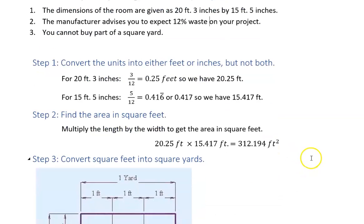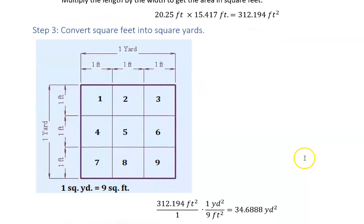Now I need to convert square feet into square yards, and this is where people make a mistake a lot of times. But when you think about one yard, this is one yard on this side and one yard on that side. That means there's three feet on one side and three feet on the other side.